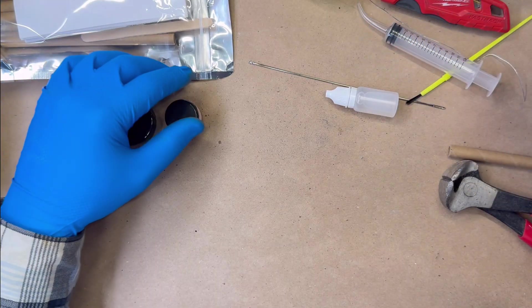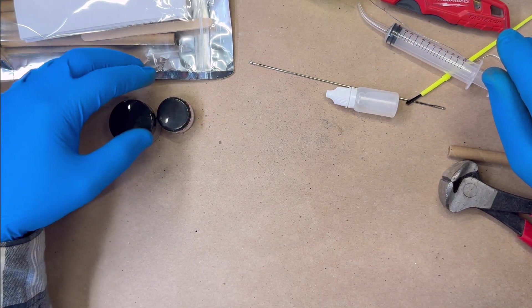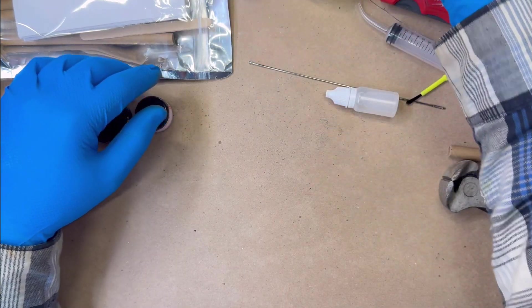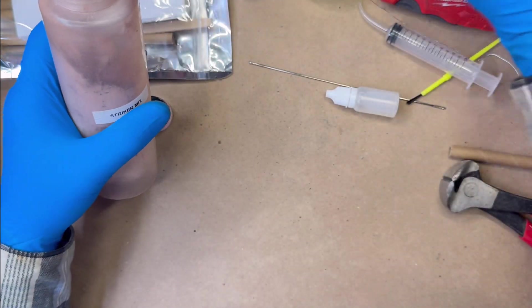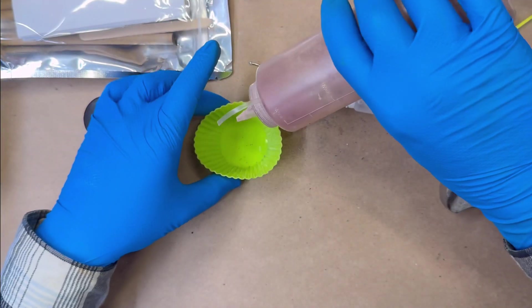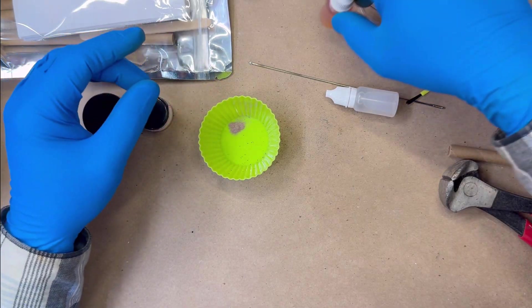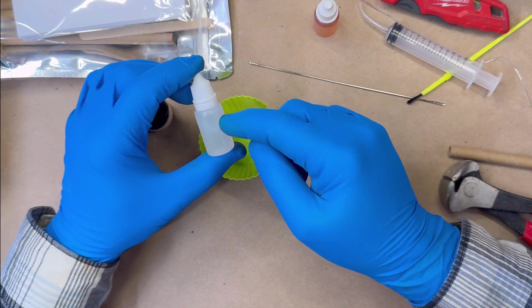So the first thing I'm going to do is use some of this striker composition. I'm not even going to open this. I'm just going to use my little bottle here that I use to fill these kits. Just a little bit of that. That's fine.